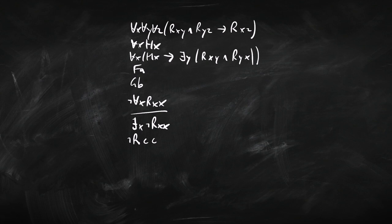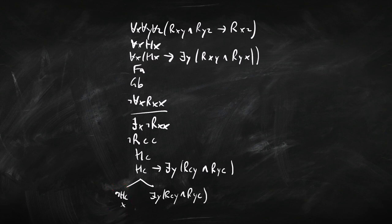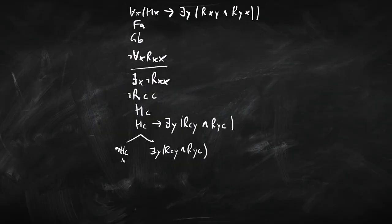I'm going to instantiate both of those with c. So we get the two instantiated sentences, and one is the antecedent of the other. We branch left and right — on the left we get not Hc, but that closes straight away. So we get the consequent on the right — an existential. To use that, we have to introduce another new name. I've already got a, b, and c in the branch, so we're going to introduce d.